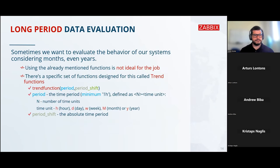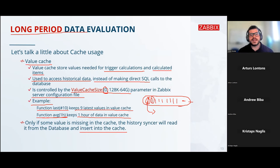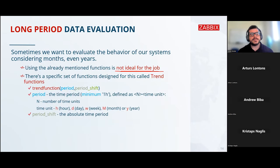Sometimes we want to evaluate the behavior of our systems over months, weeks, or even years. The already-mentioned functions are not ideal for that job. Try to picture keeping one month of information in cache just to get the average — depending on update intervals, items collecting every 10 seconds would produce a massive amount of data. That's not good for your cache. For that we have functions designed specifically for this: trend functions.